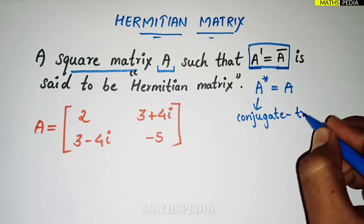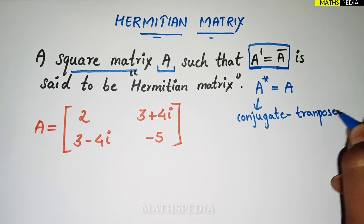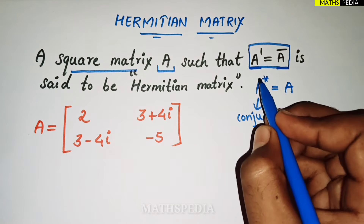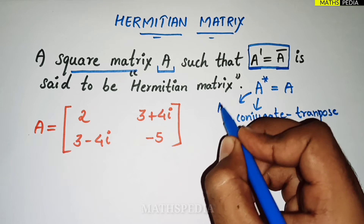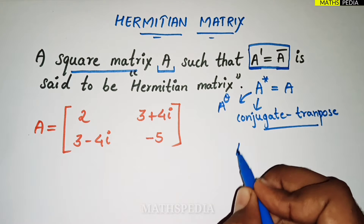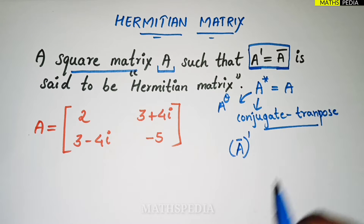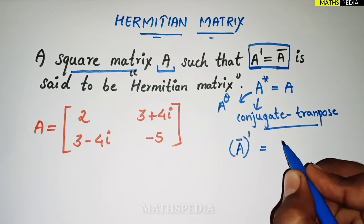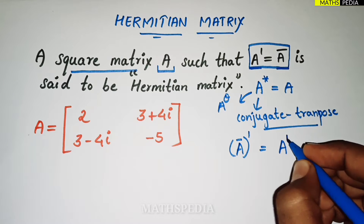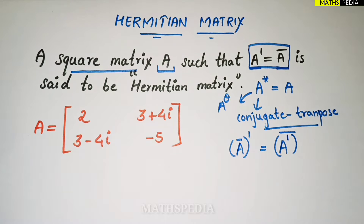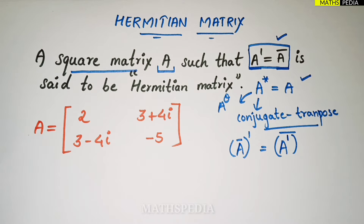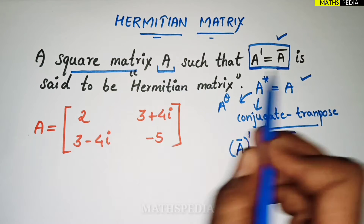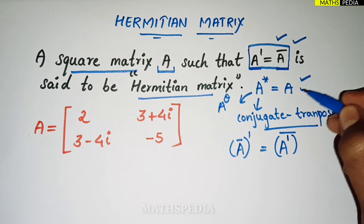A star is the conjugate transpose of a matrix. This can be represented in many ways: A star is one way, A theta is another, or A conjugate and transpose. You can also write it as A transpose first then conjugate. Both conditions — A transpose equals A conjugate, and A star equals A — will be satisfied for a Hermitian matrix.